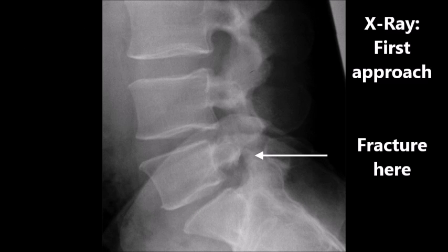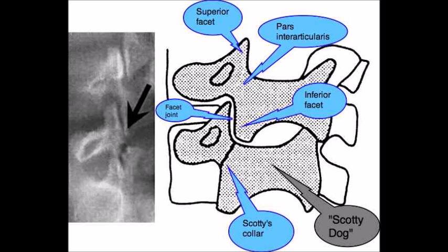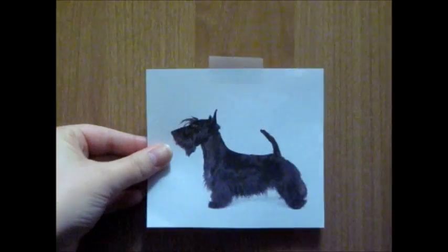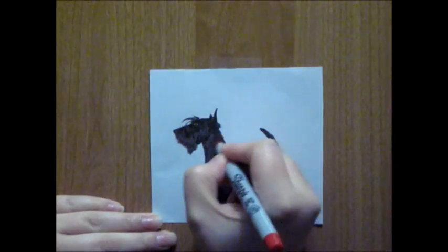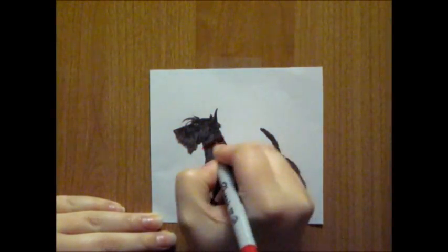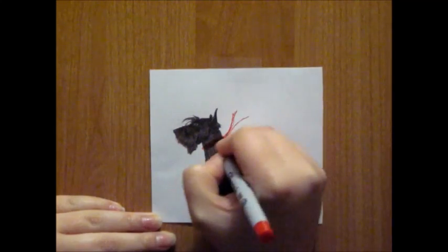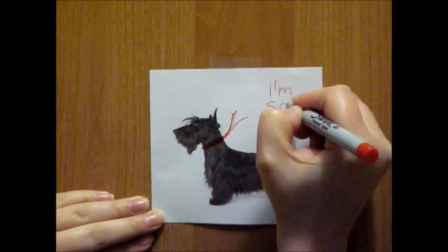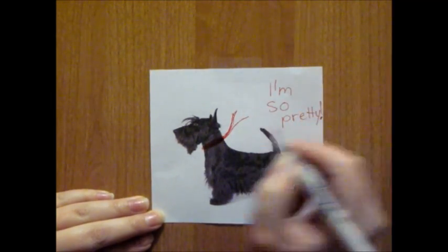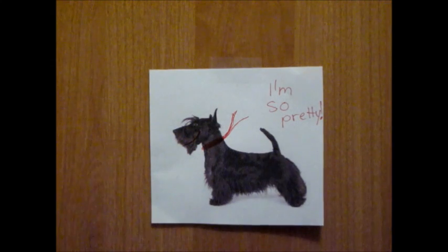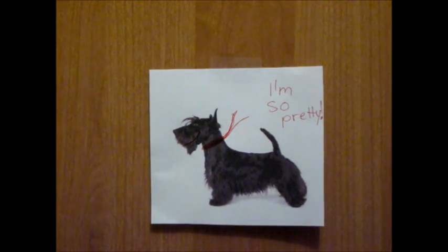In terms of imaging, the first approach is often a plain radiograph or x-ray taken of the lumbar spine in back and side views. The lateral view may show the cardinal sign of the Scotty dog with a collar. It is called a Scotty dog sign because the lateral view of the vertebra takes the shape of a little Scottish terrier. An image in which the Scotty dog appears to be wearing a collar is abnormal and suggests there is a break in the bone at that location.